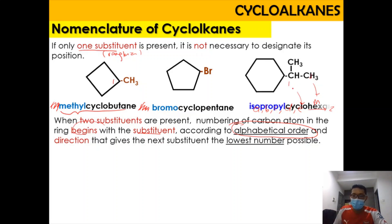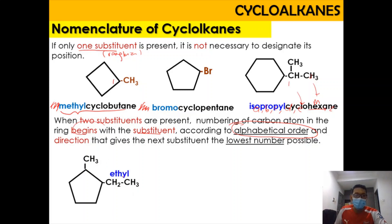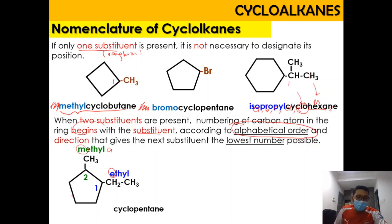For example, if we have a cyclopentane with an ethyl group CH2CH3 and a methyl group CH3, the ethyl substituent takes number 1 because E comes before M alphabetically, and methyl takes number 2. The full name is therefore 1-ethyl-2-methylcyclopentane.